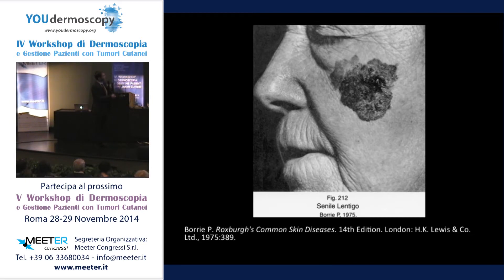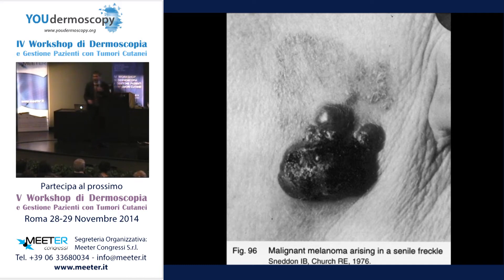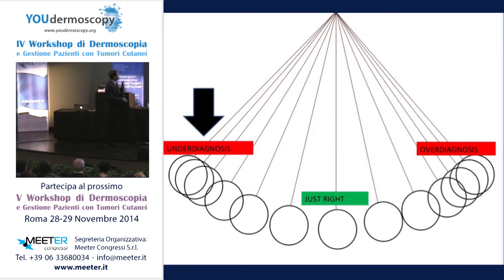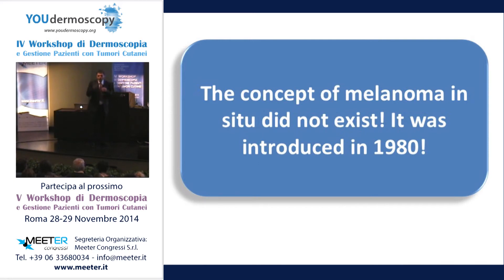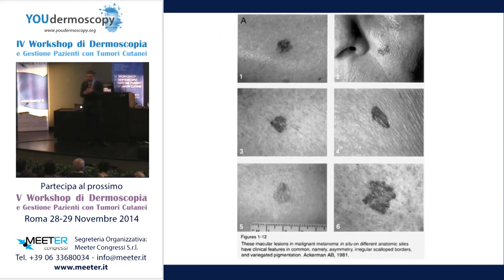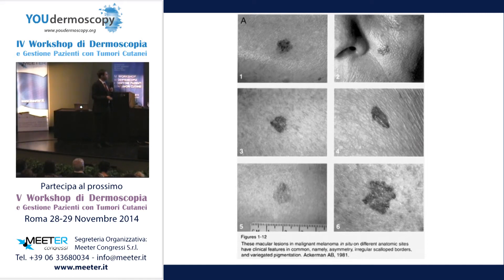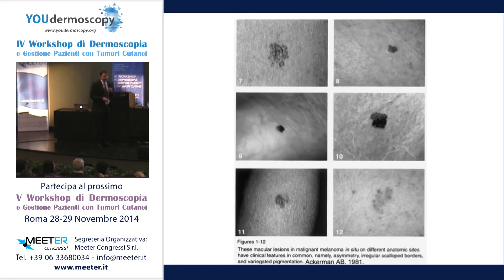What did they write here? 'Malignant melanoma arising in a senile freckle.' The senile freckle is the lentigo maligna part of the melanoma — but they could not diagnose it. So we had underdiagnosis. The concept of melanoma in situ did not exist at all in the 1970s. Melanoma in situ was introduced in 1980. Before that it did not exist. These were the first photos of melanoma in situ, published in a book called Melanoma and Melanocytic Lesions by Bernie Ackermann, who introduced the concept clinically and dermatopathologically.